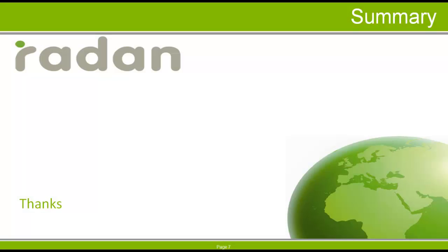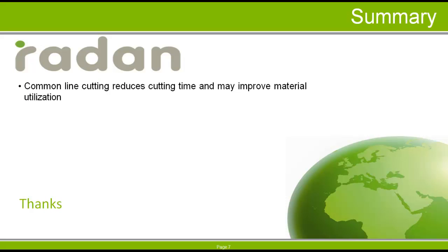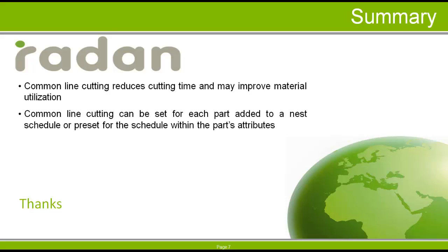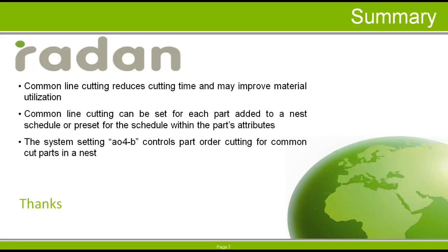In summary, we've seen that Common Line Cutting can reduce cutting time and may improve material utilization. The Common Line Cutting setting can be set for each part as it is added to the nest schedule, or be preset by way of its Common Line Cutting attributes. And the setting AO4-B controls the order of cuts for Common Line Cut parts. Thanks for watching this tech video and stay tuned for more videos from the Radan Resource Newsletter.